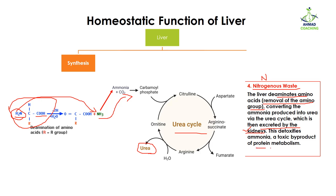In the urea cycle, urea is formed and excreted out of the body by the kidneys. This detoxifies ammonia, a toxic byproduct of protein metabolism. If you are consuming excessive protein beyond your body's requirement, the excess amino acids are sent to the liver, where the amino group is removed and converted into ammonia. This ammonia enters the urea cycle and through several steps is converted into urea — a less toxic product — which is then removed from the body by the kidneys.